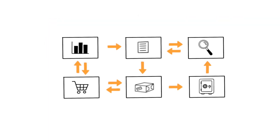Those microservices need to exchange data with each other. For example, when a user wants to purchase an item, the user interface communicates with the inventory to check if the product is in stock. If it is, the product can be added to the user's cart, and the user can proceed to payment.